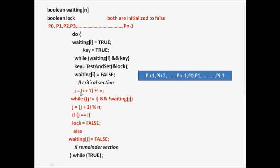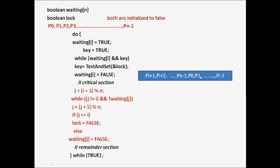After executing its critical section, process pi checks all processes in cyclic order: p(i+1), p(i+2), up to p(n-1), then p0, p1, and so on up to p(i-1). It takes the index of the next process and assigns it to variable `j` as `(i+1) mod n`. So `j` holds the index of the process next to pi in this cyclic order.